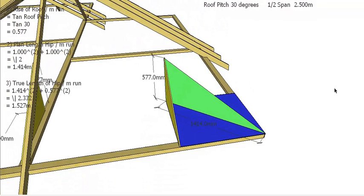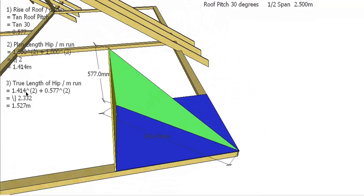The true length of the hip for every meter this way is 1.527 on that angle of the hip. What we've done is Pythagoras again with our 1.414 squared plus our rise squared, which gave us 2.332. Square root of that gives us a distance of 1.527.